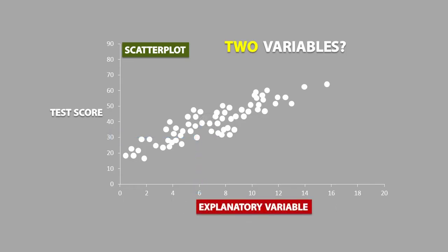You might have noticed that the explanatory variable is always plotted on the x-axis, and the response variable is always plotted on the y-axis. For this reason, the explanatory variable is denoted as x and the response variable is denoted as y.